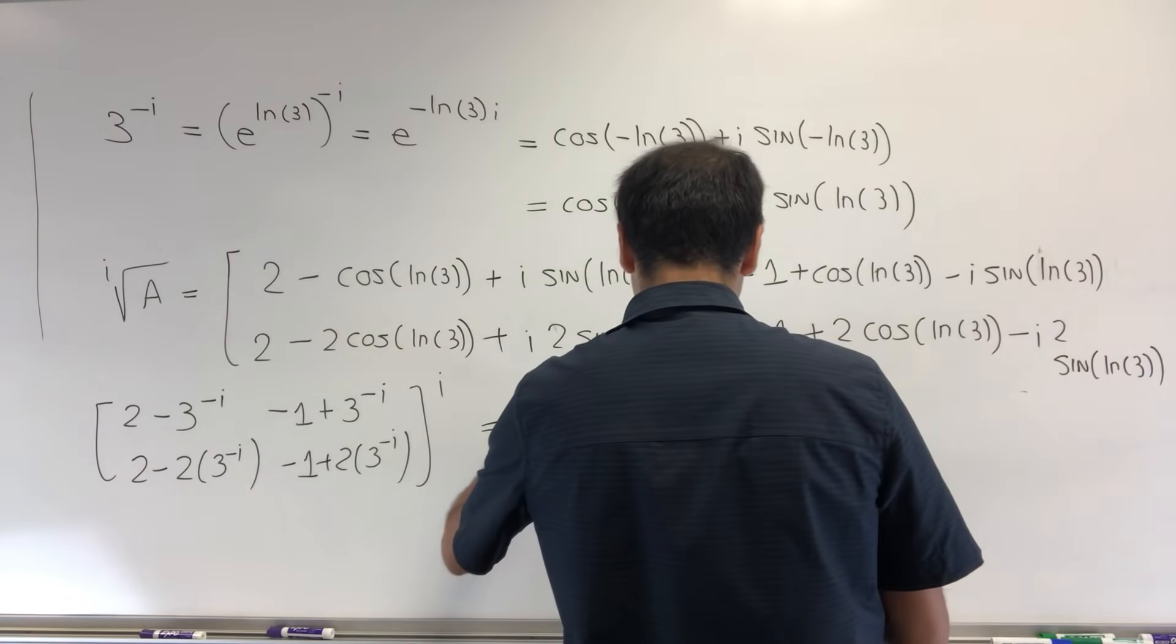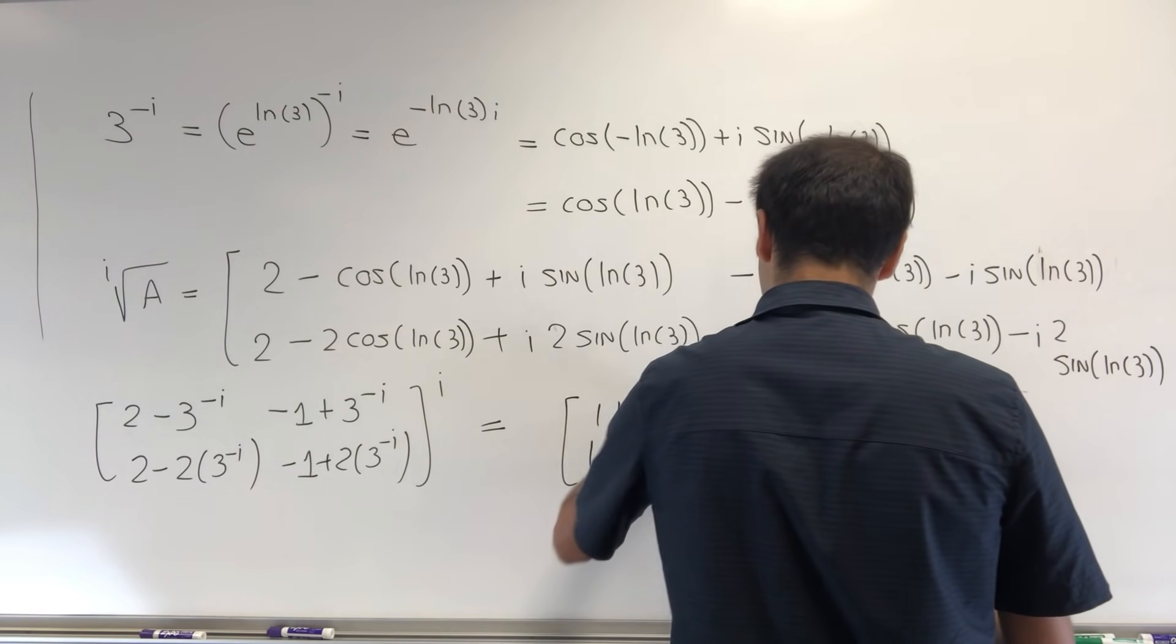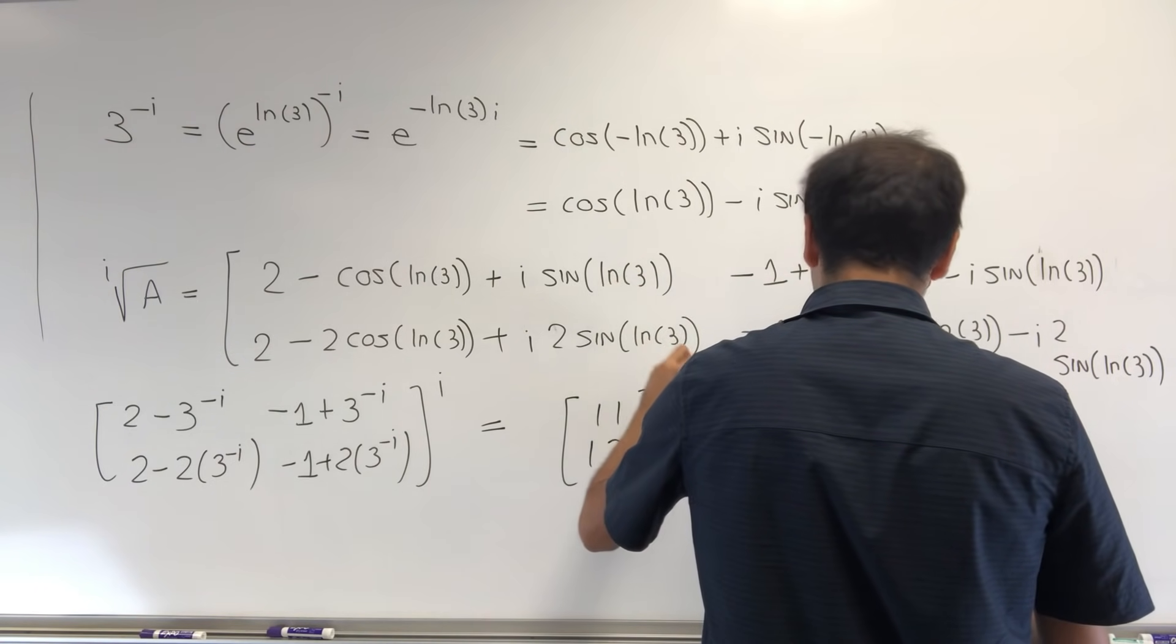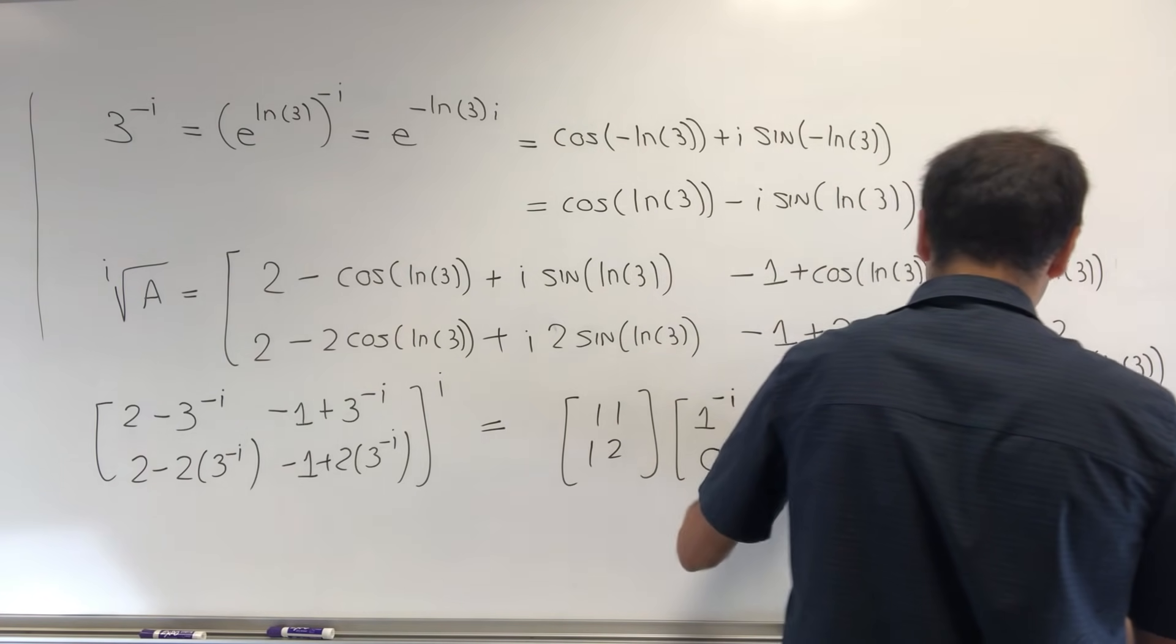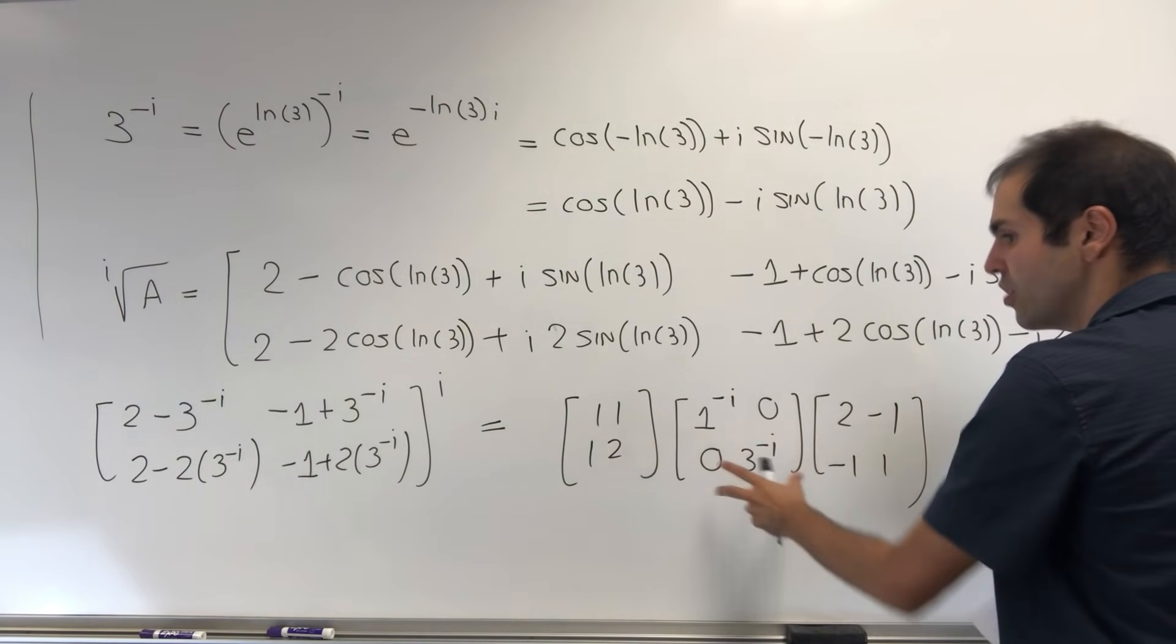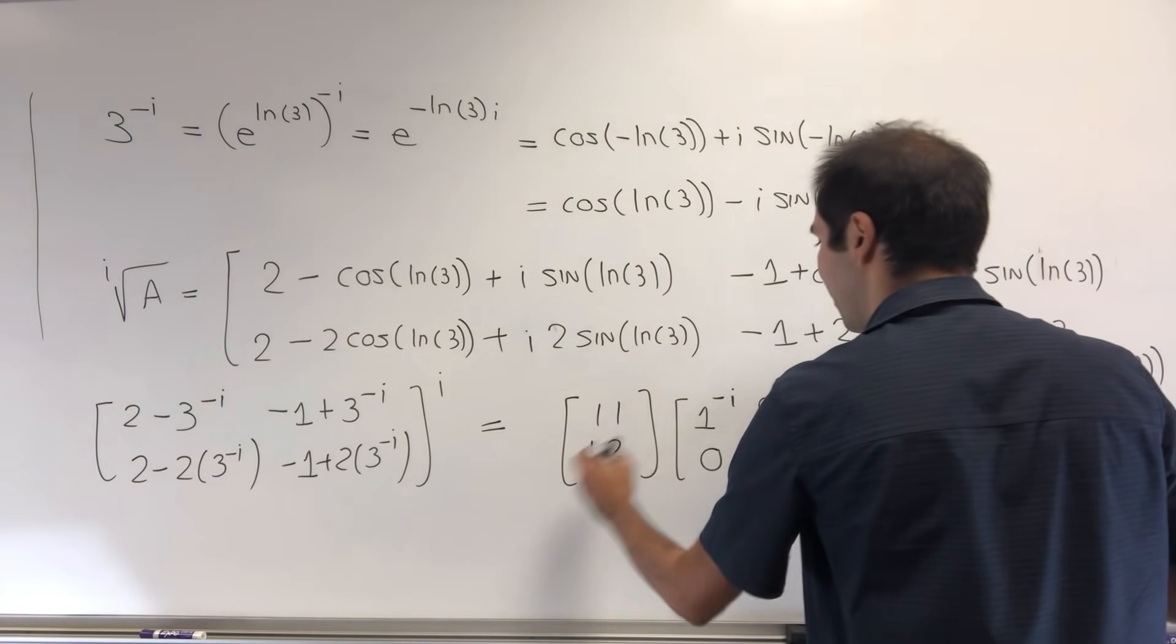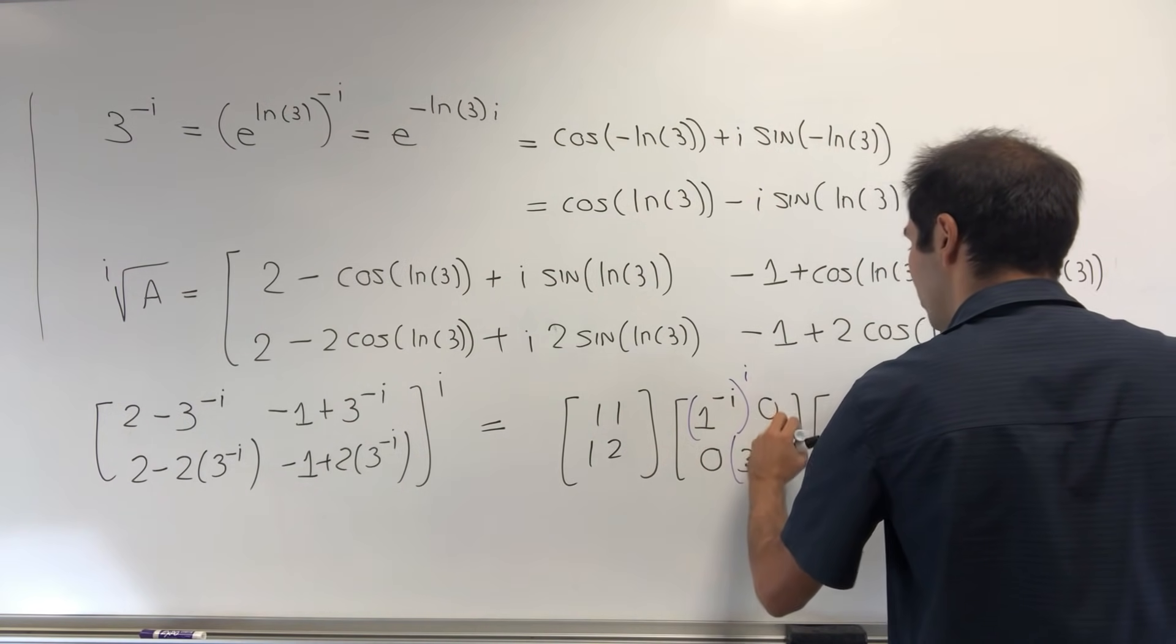But now, this is not too bad if you remember the form PDP^(-1). So remember, this becomes [1, 1; 1, 2] times [1, 0; 0, 3^(-i)], and then [2, -1; -1, 1]. So that's our i-th root of A, and now if you raise this to the i-th power, it's the same thing as raising the diagonals to the i-th power.